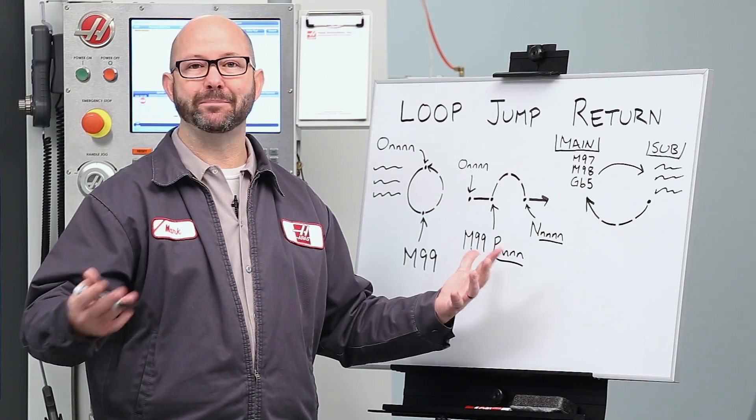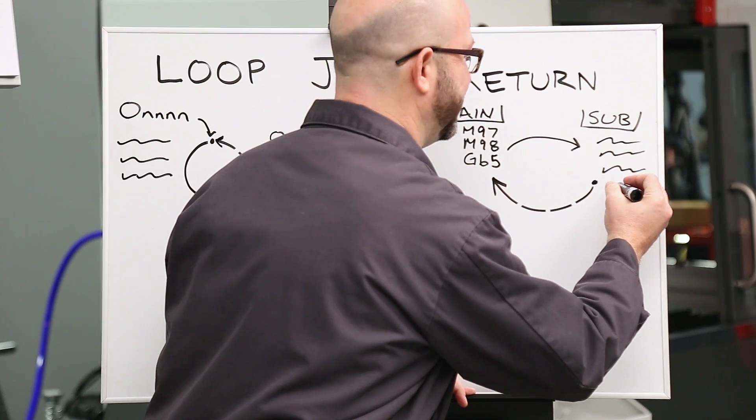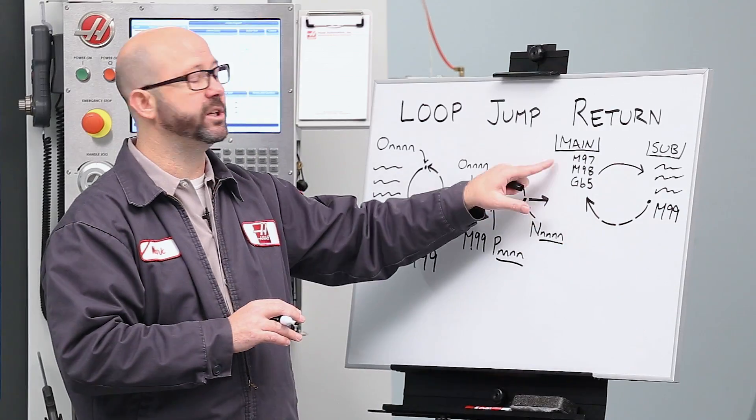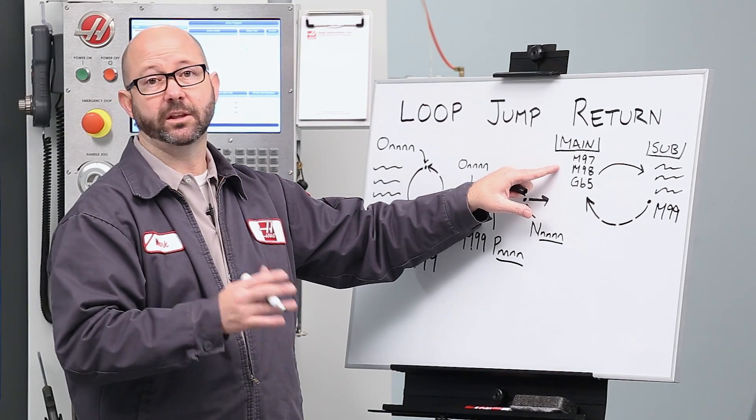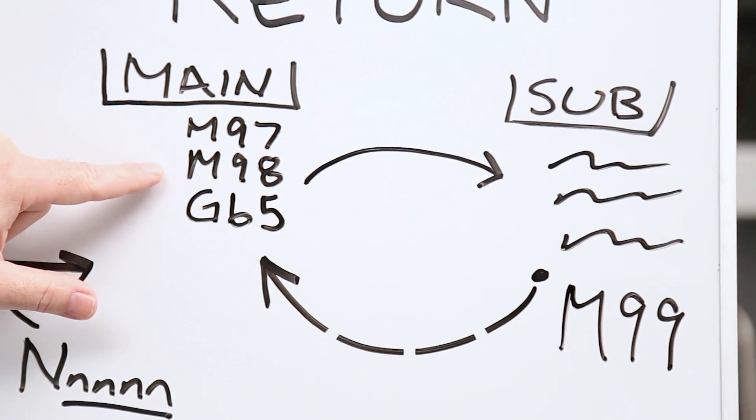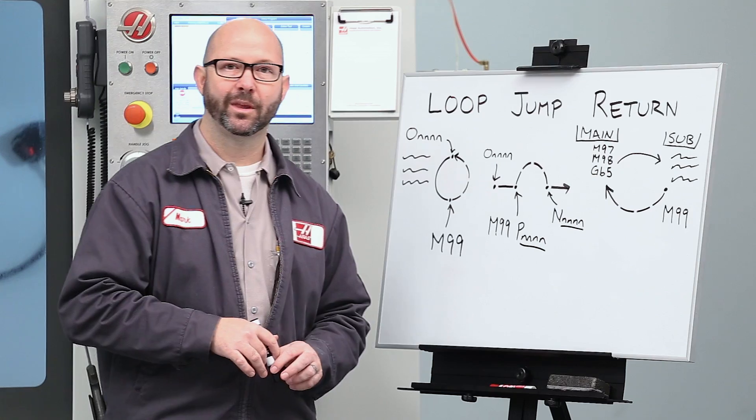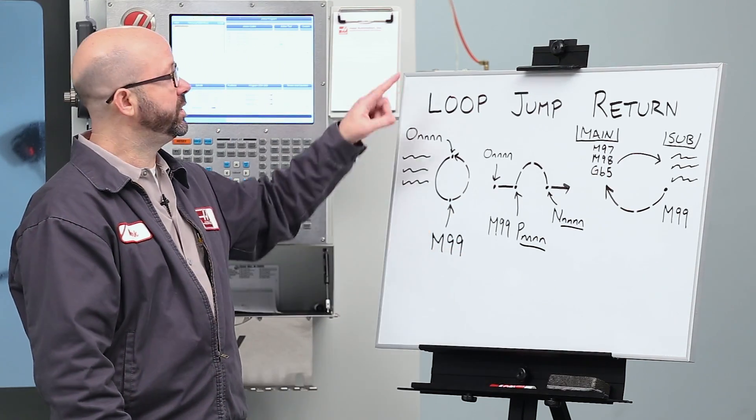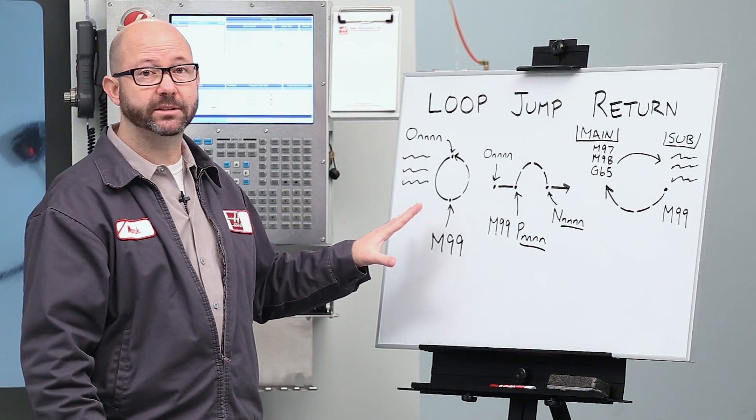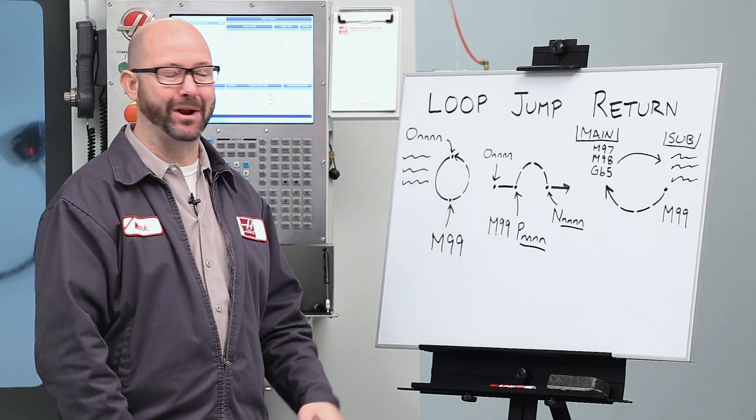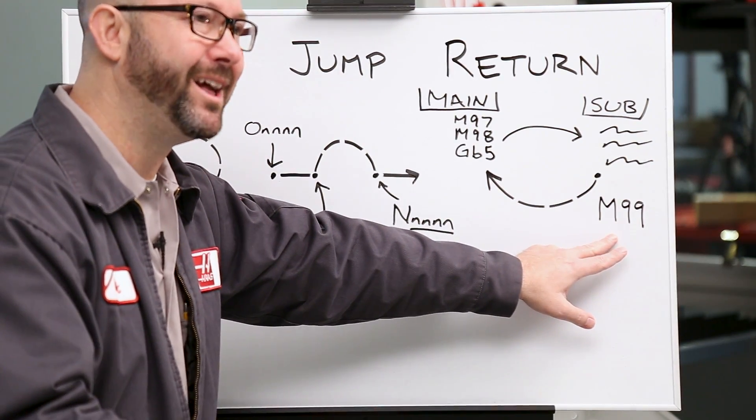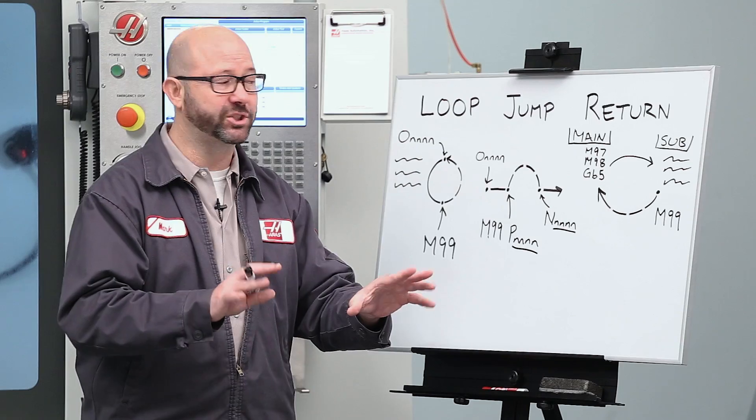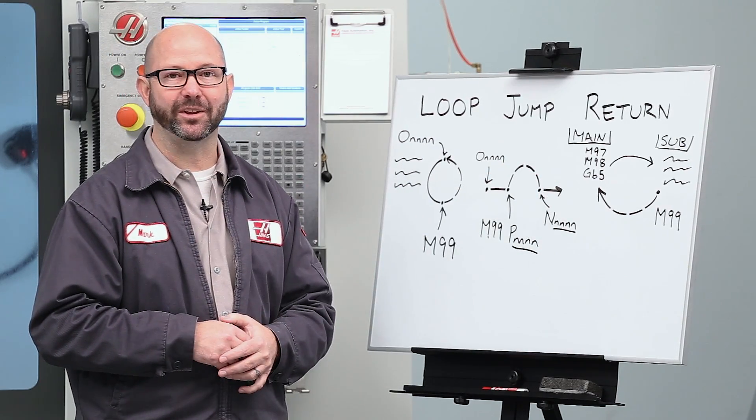Well, this is a video on M99, so an M99 at the end of our subprogram will return us to our main program on the line just following our M97, M98, or G65 macro call. But wait, I thought that a plain M99 would cause the program to loop. Well, it does, except when it's in a subprogram. When you're in a subprogram, a plain M99 causes the program to return to the main. Again, for more information, wait for these M97, M98 videos.